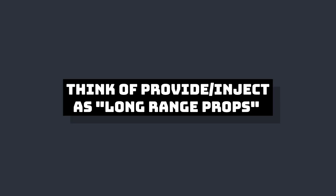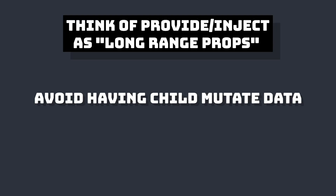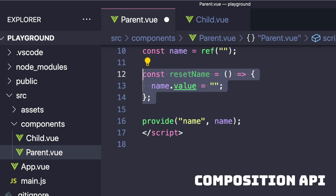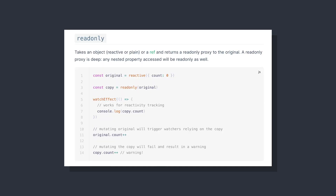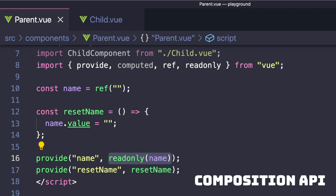A lot of the best practices when dealing with dependency injection work similar to props. Most of the time, we don't want the component where our data is injected to be able to directly mutate the reactive property. To do this, we can create a setter method from our parent and also use provide to pass that down to our other components. Finally, it's best to use Vue's read-only capabilities around our ref to make sure that anything we pass in provide can't be mutated by wherever it's injected.